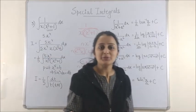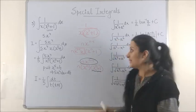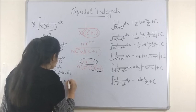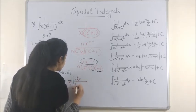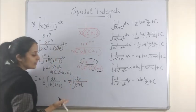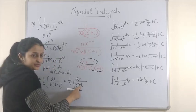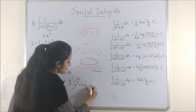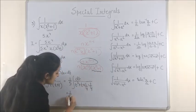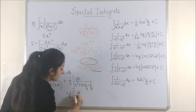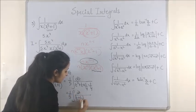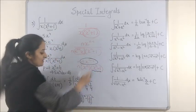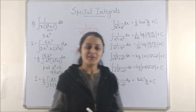Brilliant. Now all you need to do is complete the square and apply this special integral. This becomes dt upon t squared plus t. Going by the same logic — taking the coefficient, its half which is 1 by 2, adding and subtracting its square — this takes the form t plus 1 whole square minus 1 by 2 whole square. And once again it is this formula — apply it and enjoy your answer.